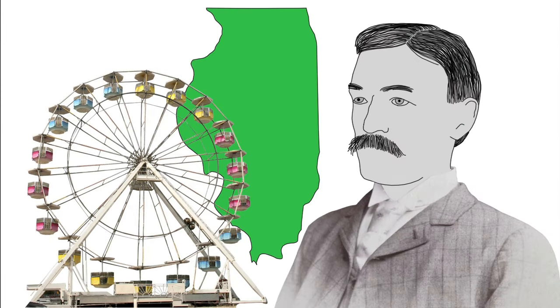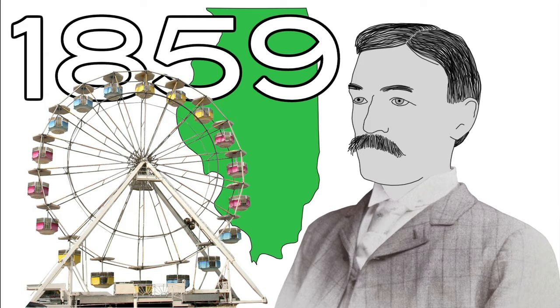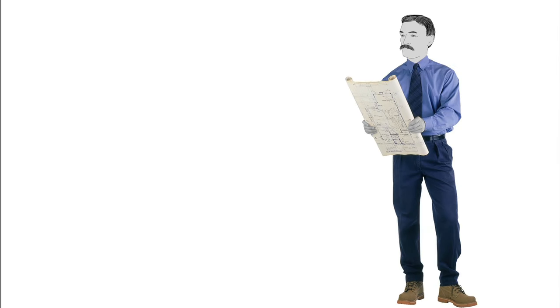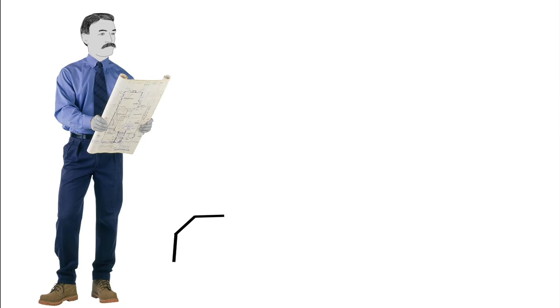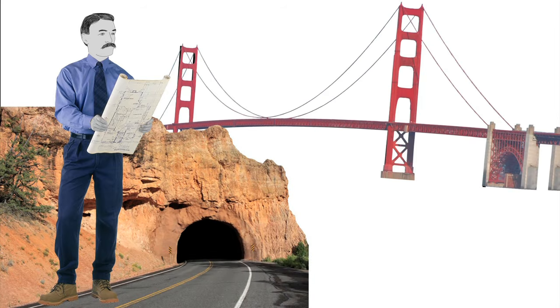Meet George Ferris, born in Illinois in 1859. George started out as an engineer and graduated from the Rensselaer Polytechnical Institute in Troy, New York. Originally, he specialized in building steel frames for tunnels and bridges.